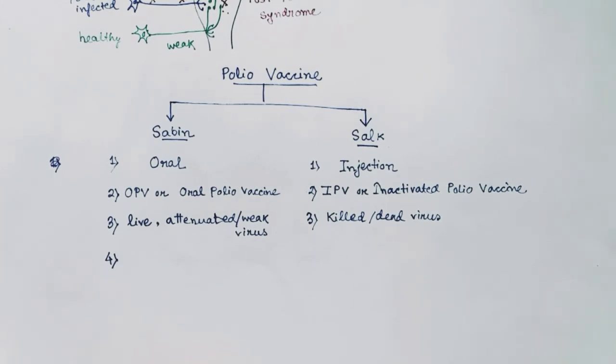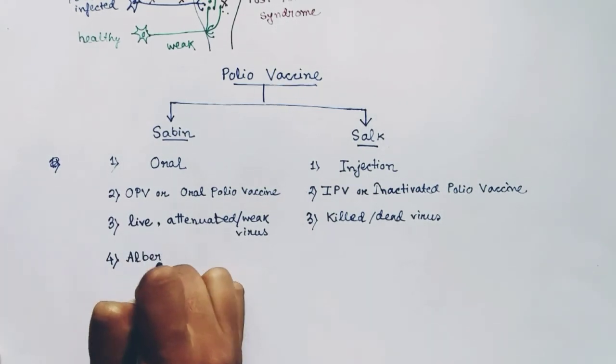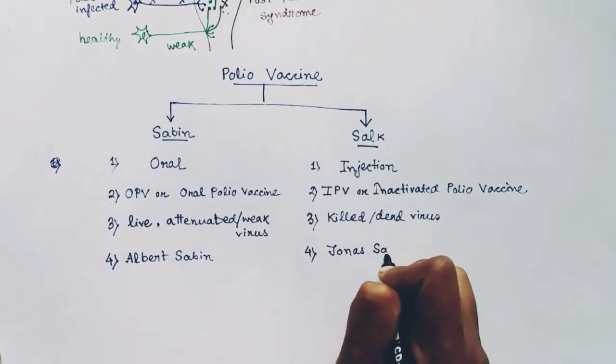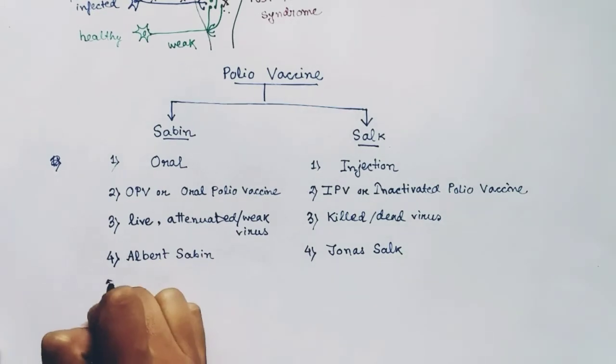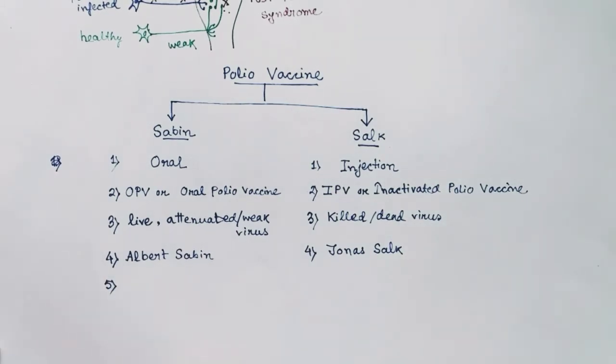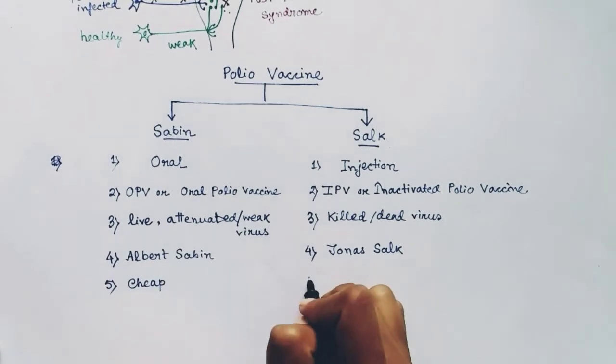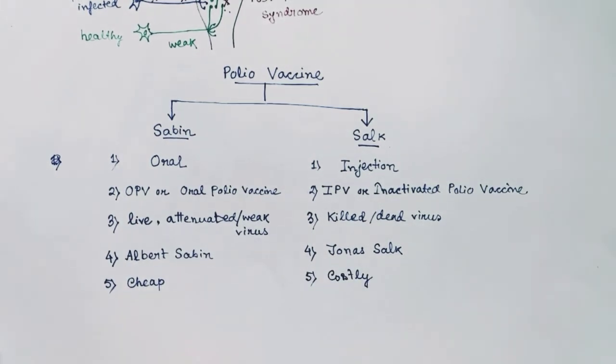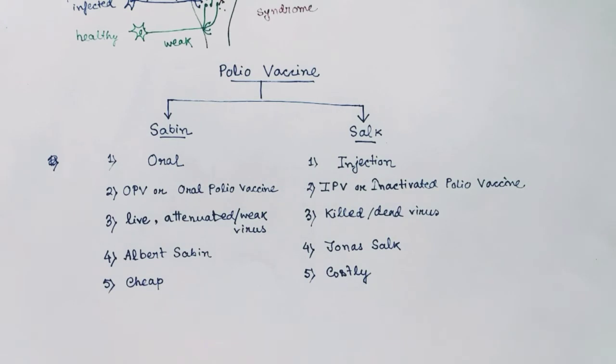Sabin vaccine was developed by Albert Sabin and it is named after him. And the Salk vaccine was developed by Jonas Salk and it is also named after him. The Sabin vaccine is quite cheap and the Salk vaccine is quite costly, so Sabin vaccine can be used in large scales.